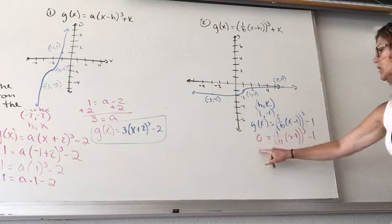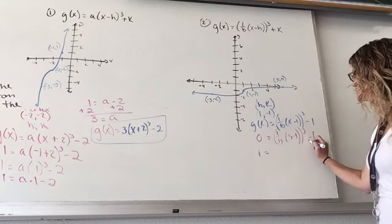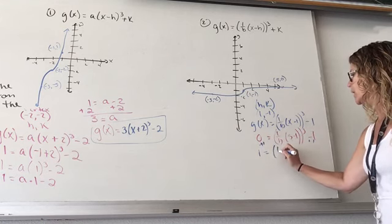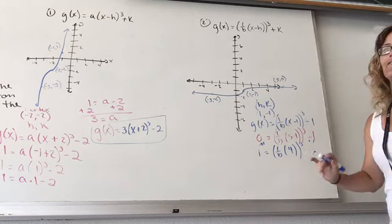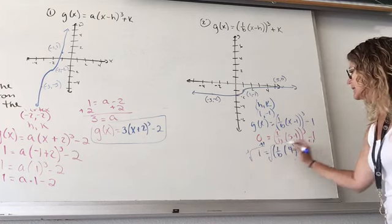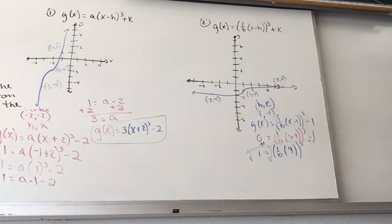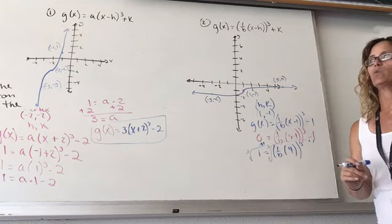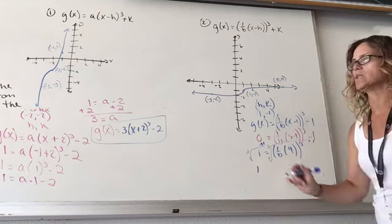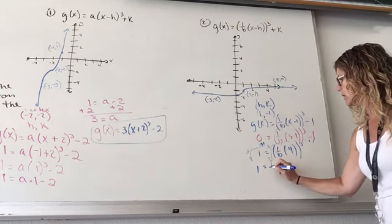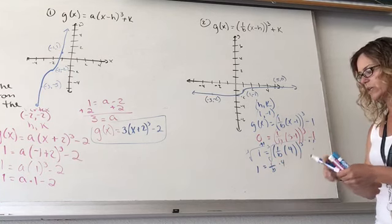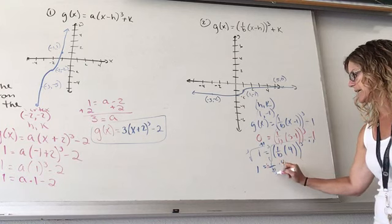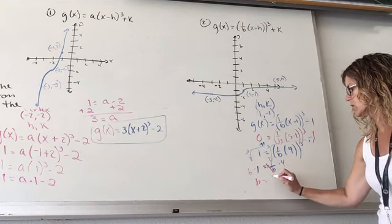So first thing I'm going to do is add this 1 over to this side. So I get 1 = (1/B)(4)³. So here's a little bit of the trickiness. To undo the cubing, I have to cube root both sides. You have a button on your calculator that does cube roots. If you take the cube root of 1, it's like asking what did I multiply times itself three times to get 1? Well, 1 times 1 times 1 is 1. So the cube root of 1 is 1. And I get 1 = (1/B)(4). So now I want to solve for B. I'm going to multiply this by B to cancel them out. So that gives me B = 4.